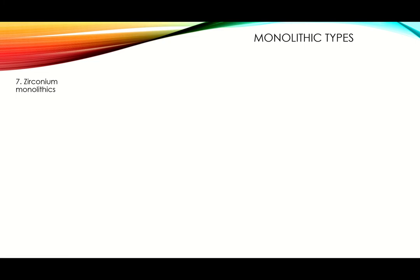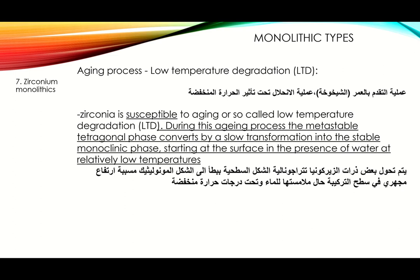In the last recording we were talking about zirconium monolithics and discussed the zirconia block composition in detail. We stopped at the aging process, or low temperature degradation, known as LTD. Zirconia is susceptible to aging during which the metastable tetragonal phase converts by a slow transformation into the stable monoclinic phase, starting at the surface in the presence of water at relatively low temperatures, including oral fluids.